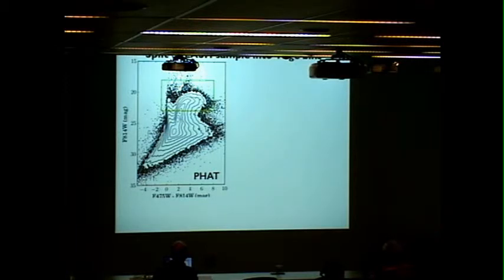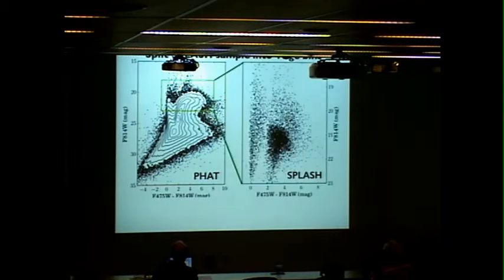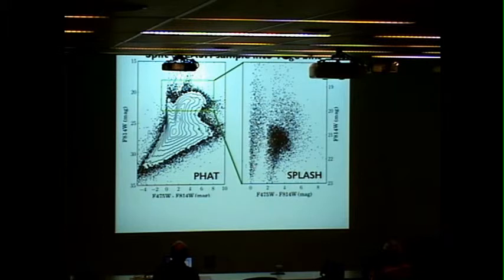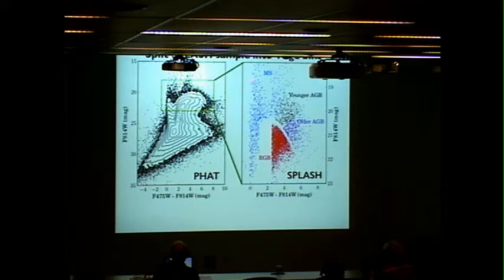The green region shows where we can get spectra. Now I'm going to zoom in on that region. You can see the young massive main sequence, the red giant branch, and the asymptotic giant branch. I'm using this to split my stars into four age bins. Main sequence are the youngest, then younger AGB, then older AGB, and red giants are our oldest on average.